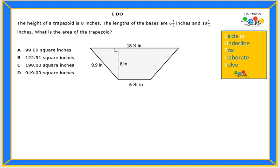Let's start by reading the I Do problem. The height of a trapezoid is 8 inches. The lengths of the bases are 6 1⁄2 inches and 18 1⁄4 inches. What is the area of the trapezoid?